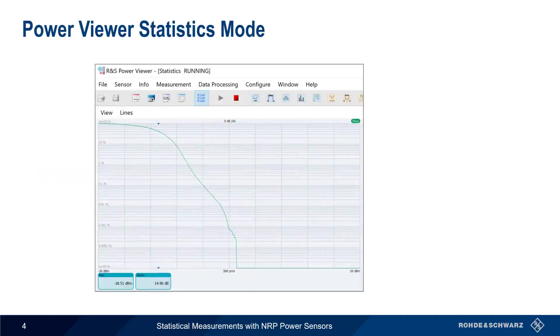You should already be familiar with the Continuous Measurement mode in PowerViewer. For statistics measurements, we need to be in Statistics mode. As with Continuous Average mode, statistics measurements can be stopped and started using the Stop and Start buttons in the toolbar.